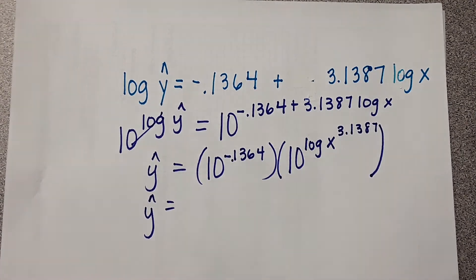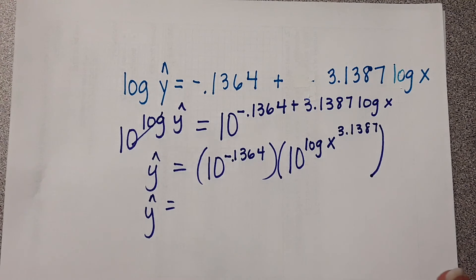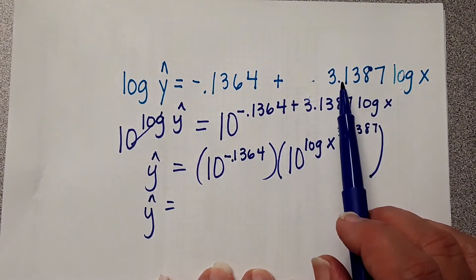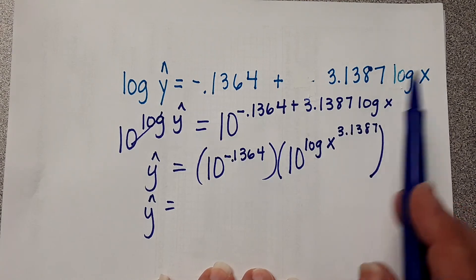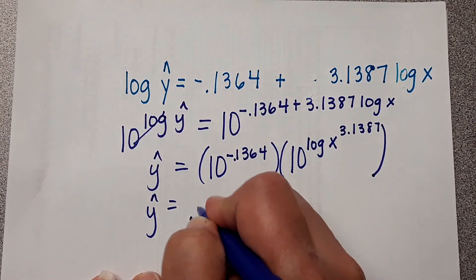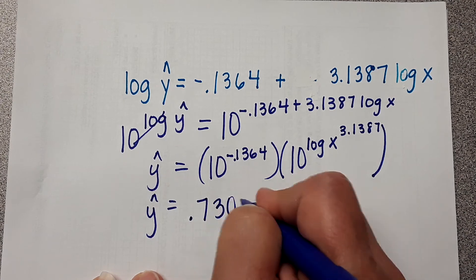One thing I like about power models is that the equation is a little bit nicer. So again, when you're doing log of both sides, remember I made an error before — this becomes the exponent for x. So what's going to happen is we're going to do 10 raised to the negative 0.1364, and we're going to get 0.7305.